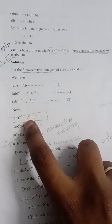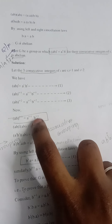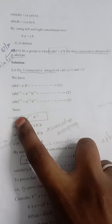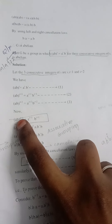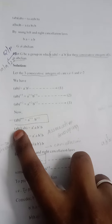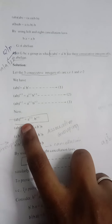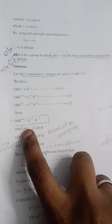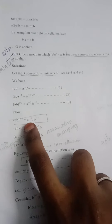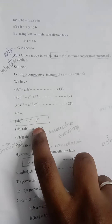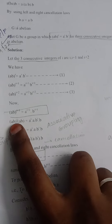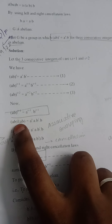We take the equation (ab)^(i+1) = a^(i+1) * b^(i+1) and split the powers: (ab)^i * (ab)^1 on the left, and a^i * a^1 and b^i * b^1 on the right, using the index laws.